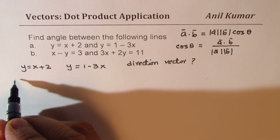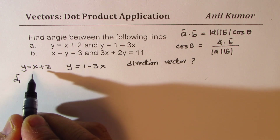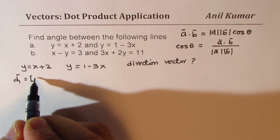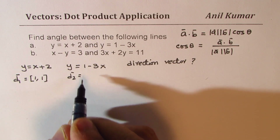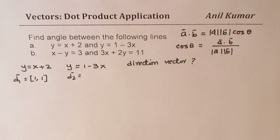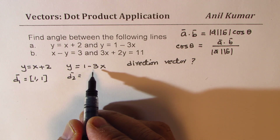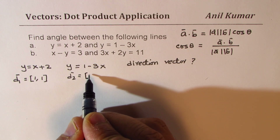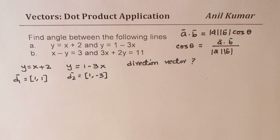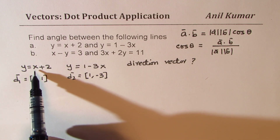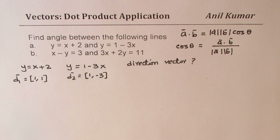For the first line, the direction vector is basically equal to 1 comma 1. For the second line, the slope is minus 3, so for every x change of 1, the y value changes by minus 3. So we can write this as 1 comma minus 3. That gives you the direction vector for the second line. The change in x is written first and the change in y value is second. If you look at it that way, it is much simpler.